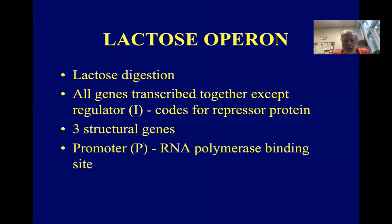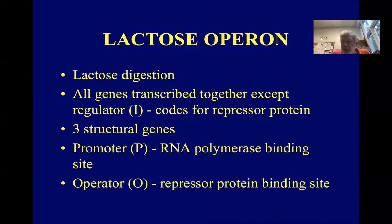There are three structural genes in the lactose operon. Promoter region where the RNA polymerase binds, this is kind of like the on switch. And then the operator region where the repressor protein binds, that's essentially the off switch.